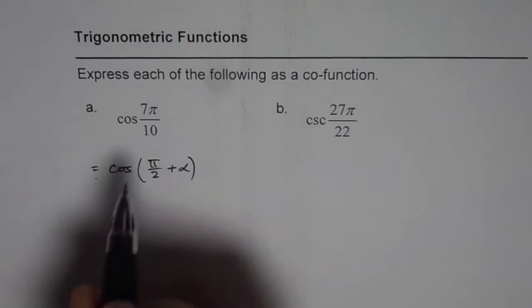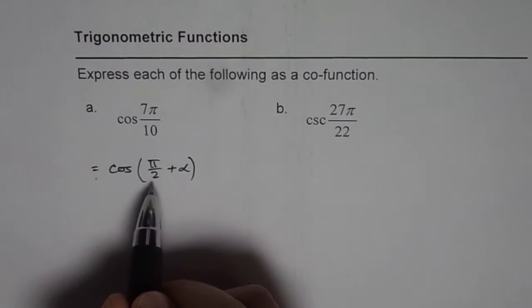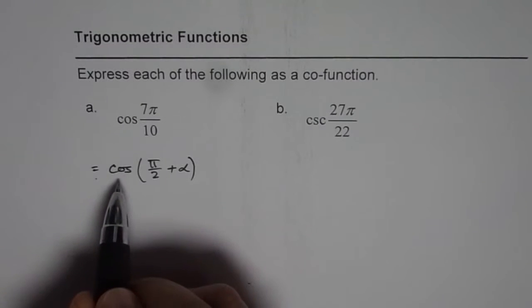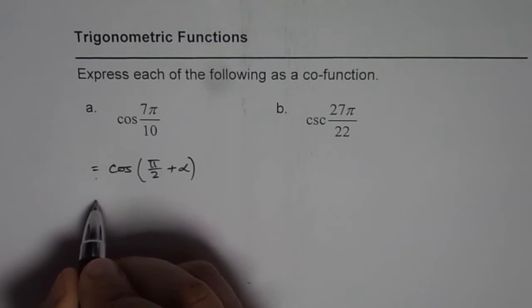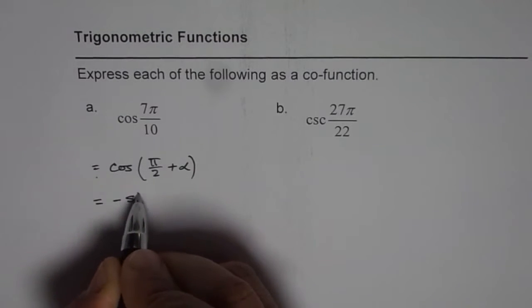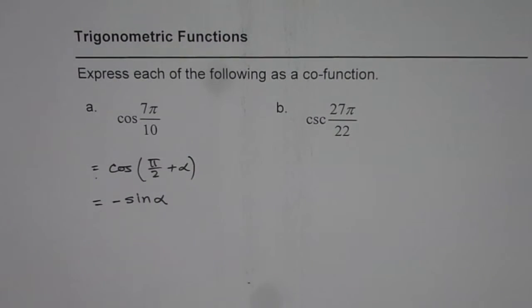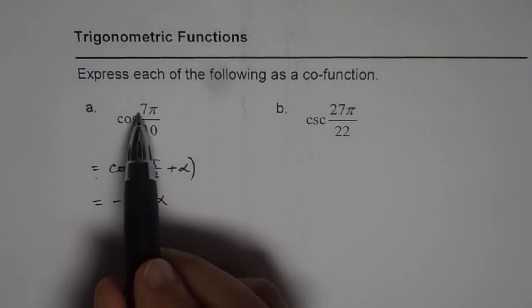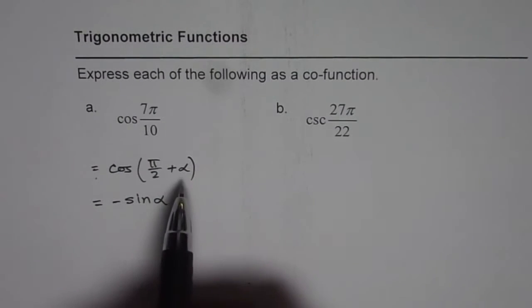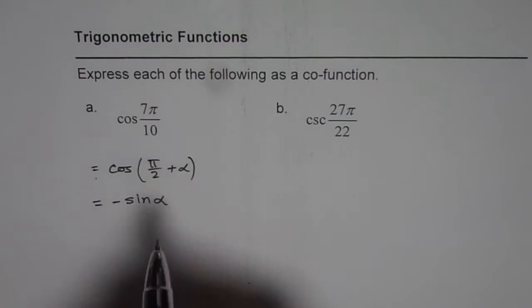In that case, since our point will be in quadrant 2, cos is going to be negative. So this value will be equals to minus sine α. So that is the strategy. So we need to break this angle 7π/10 and find the angle α.